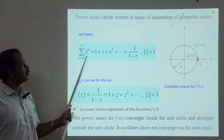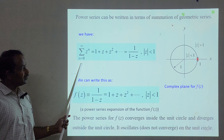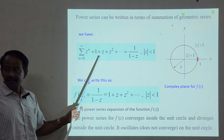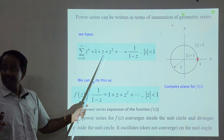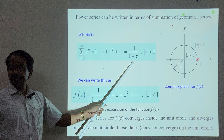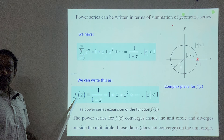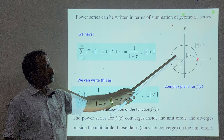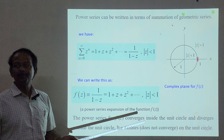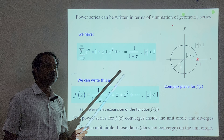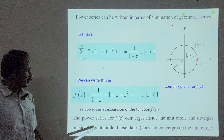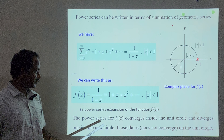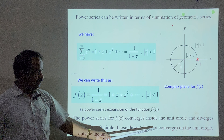Power series can be written in terms of a summation of geometric series. The series sigma over n equals 0 to infinity of Z to the power n expands as: when n equals 0 you have 1, n equals 1 you have Z, n equals 2 you have Z squared — representing linear and nonlinear terms. The same series can also be written as 1 divided by (1 minus Z), so f(Z) equals 1/(1−Z) equals 1 plus Z plus Z squared, where |Z| is less than 1. The power series converges inside the unit circle and diverges outside the unit circle; it oscillates on the unit circle itself.